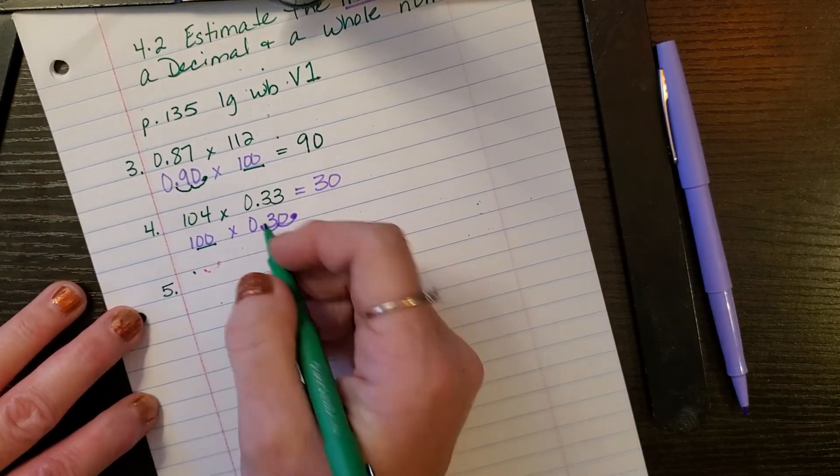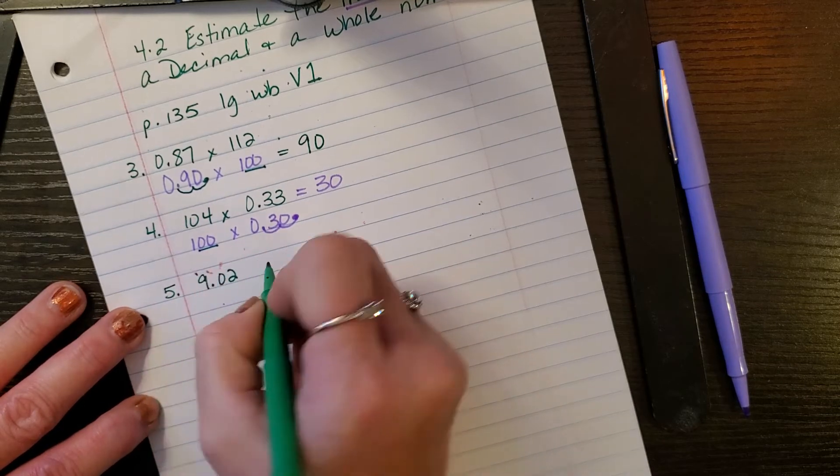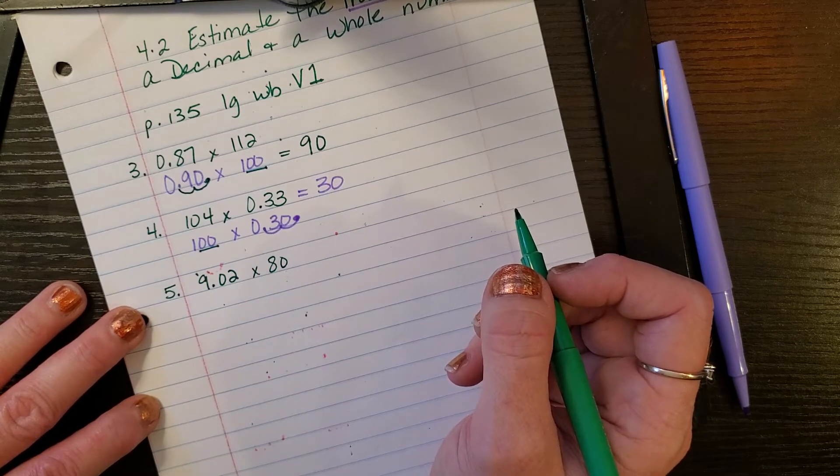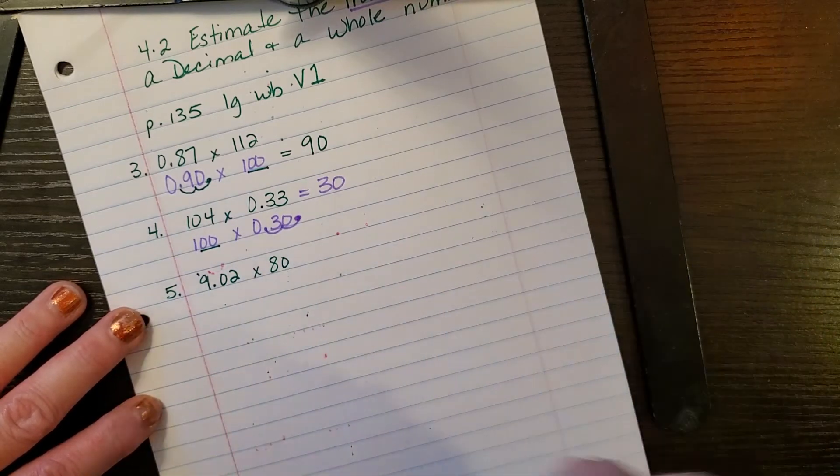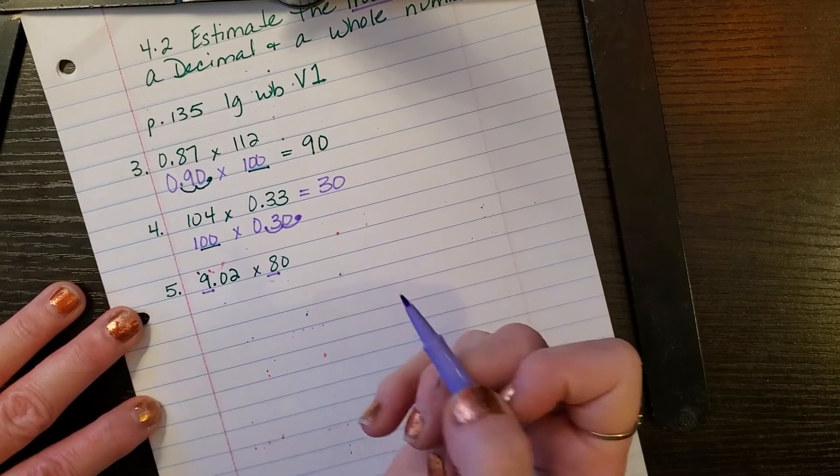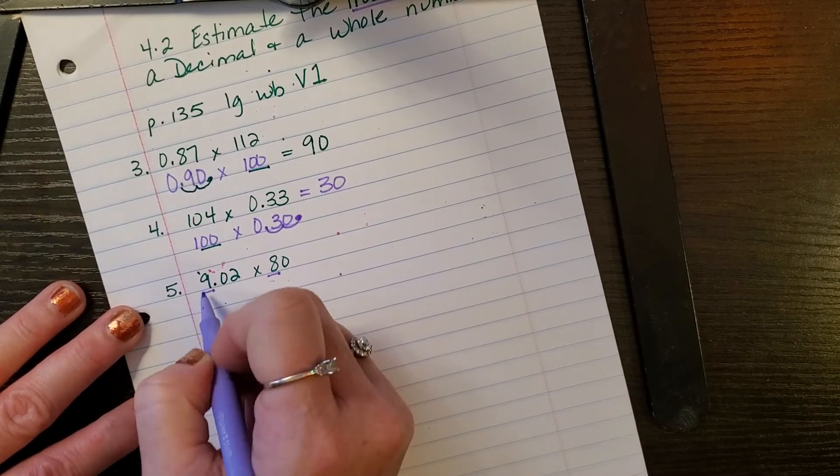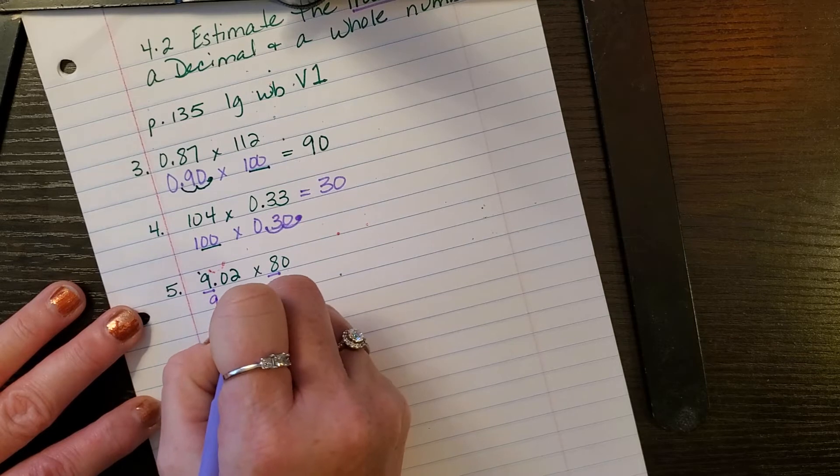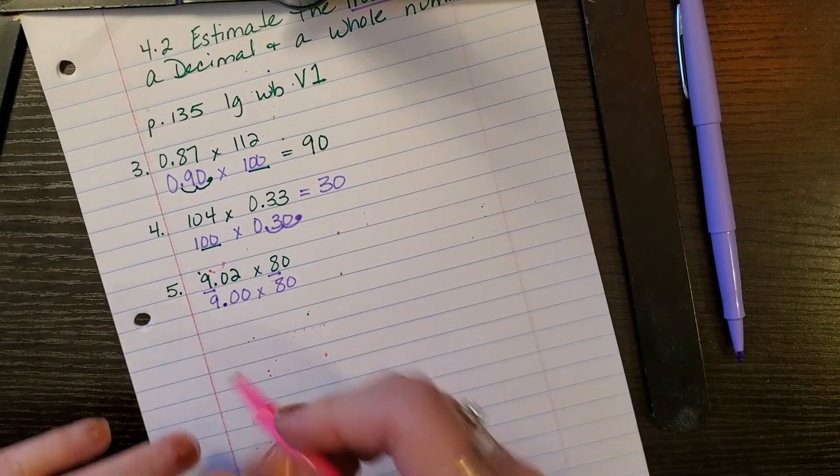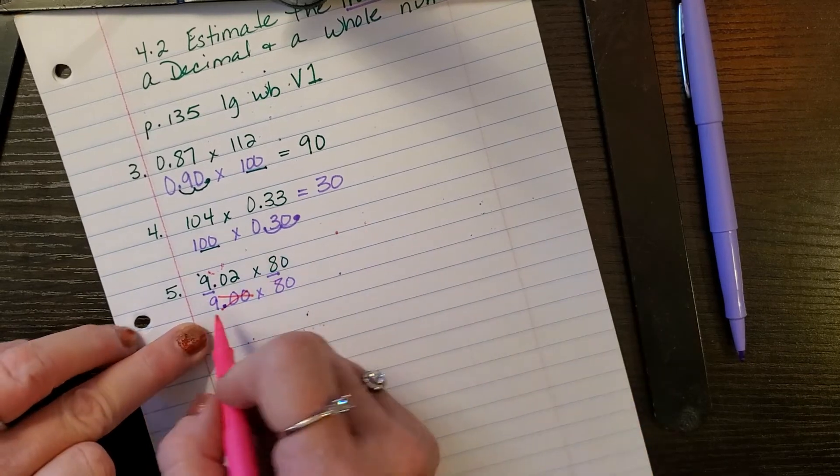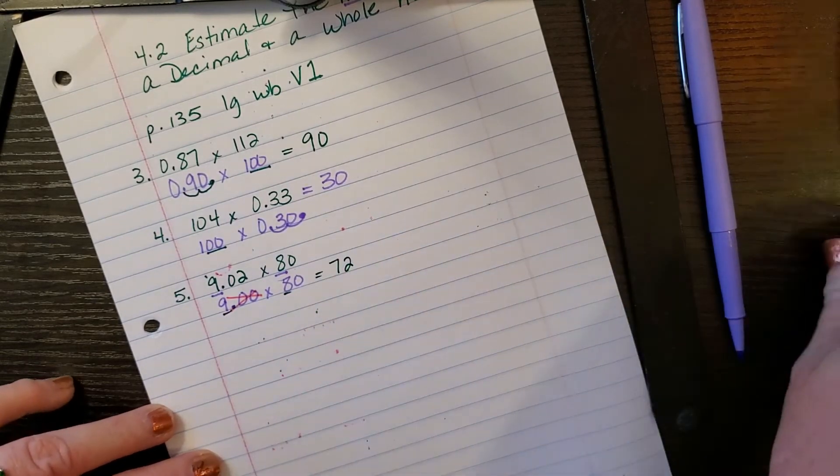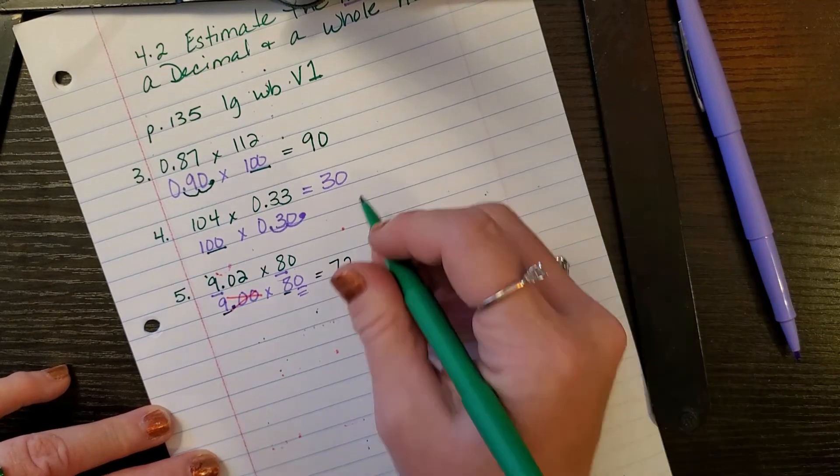Number five: 9.02 times 80. I have a basic fact. I've got a whole number of nine and a whole number of eight. So I don't think I need to round 80, I've already got a zero in there, but I need to make these zeros. So I'm going to round this to 9.00 times 80. Well, if you know what you're doing, 9.00 is just nine. So nine times 80. And now we have basic fact. What's nine times eight? Yes, that's 72. And then we have one zero to add. So the answer is 720.